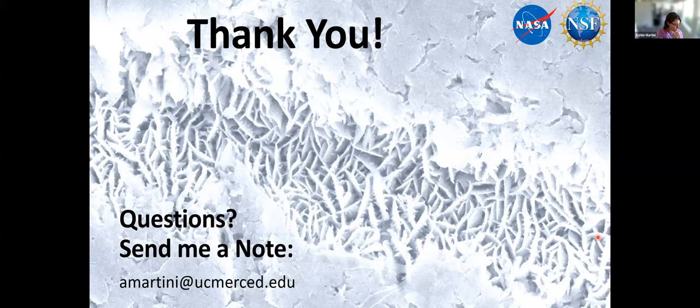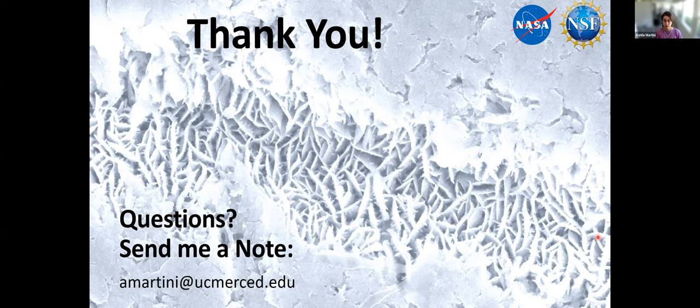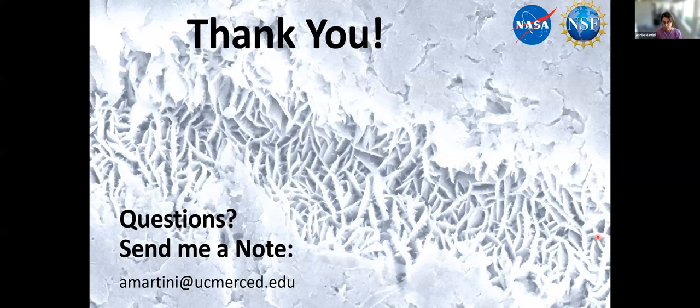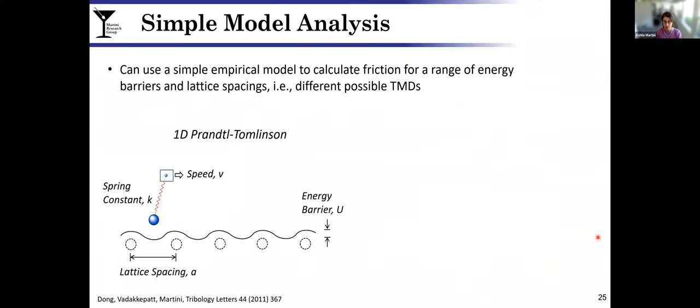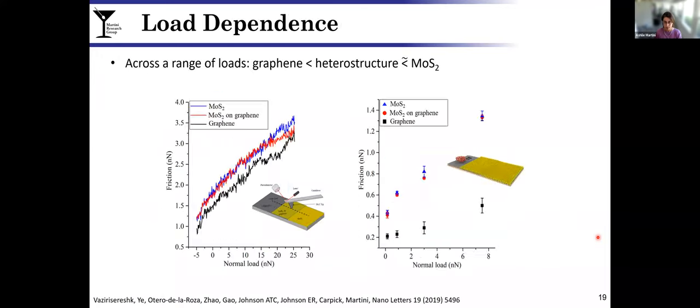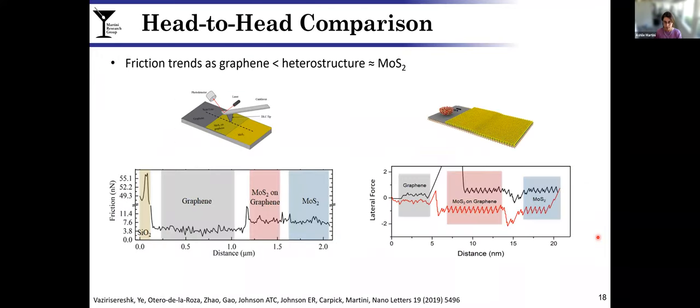Thank you for a very nice talk. I have just one question. Could you image the friction map across the heterostructure graphene? Do you have also the map of it, or just a trace? I don't have that in front of me. We do have friction maps, but I don't have it in this presentation.